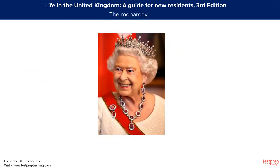Queen Elizabeth II is the Head of State of the UK and also the Monarch or Head of State for many countries in the Commonwealth. The UK has a constitutional monarchy, meaning the King or Queen does not rule the country but appoints the government which the people have chosen in a democratic election. The Monarch invites the leader of the party with the largest number of MPs, or the leader of a coalition, to become Prime Minister. The Monarch has regular meetings with the Prime Minister and can advise, warn, and encourage, but decisions on government policies are made by the Prime Minister and Cabinet.